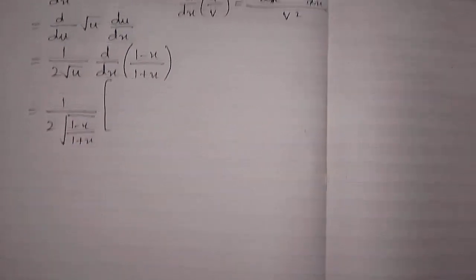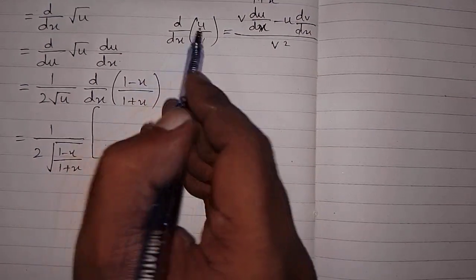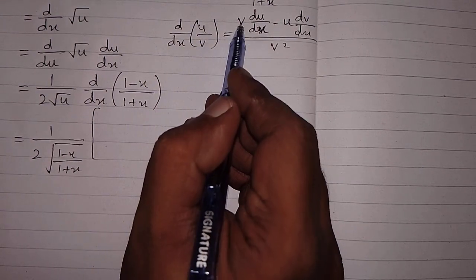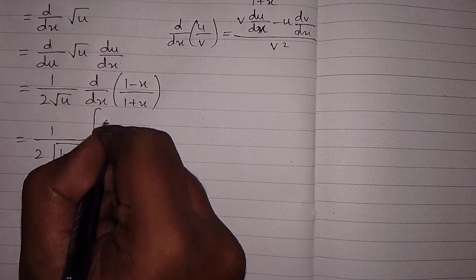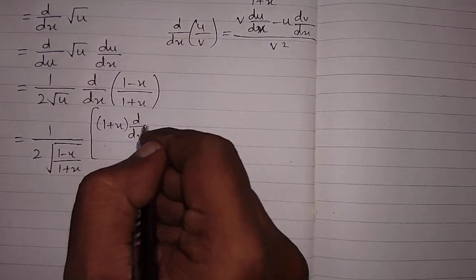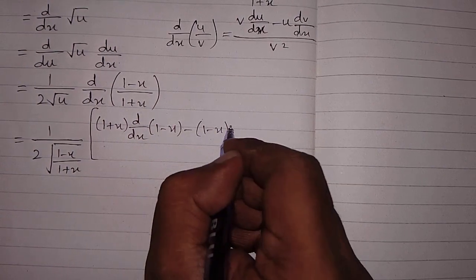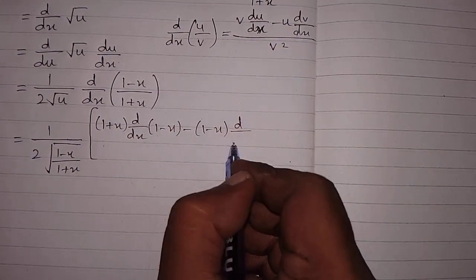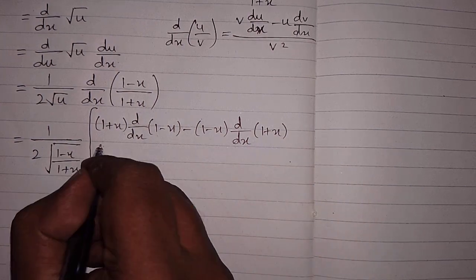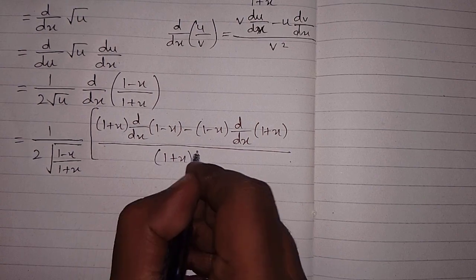We can see that we have 1 - x in place of u and 1 + x in place of v. So first we write v, which is (1 + x), multiplied by the derivative of u, minus u, which is (1 - x), times the derivative of v. In the denominator we have v² so we write (1 + x)².